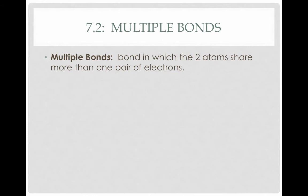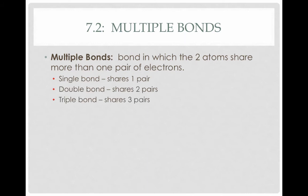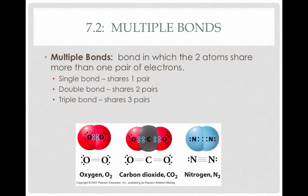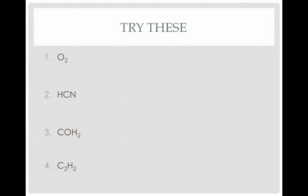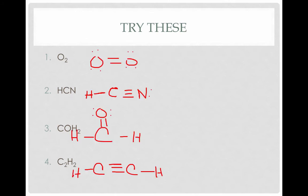A multiple bond is a bond in which two atoms share more than one pair of electrons. You can have double bonds or triple bonds in addition to single bonds. For example, oxygen exhibits a double bond, carbon dioxide has two double bonds, and nitrogen has a triple bond. Here are some to try on your own — pause the video and draw these Lewis structures. Welcome back — here's what you should have gotten.